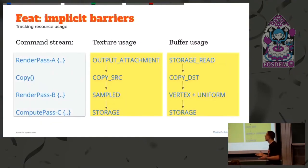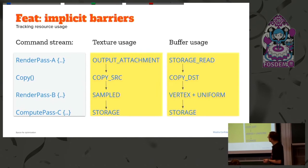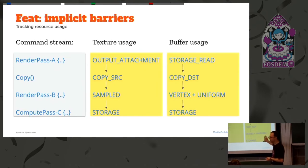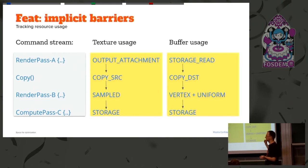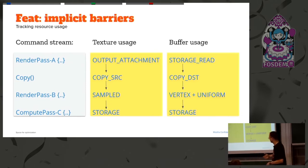Implicit barriers: you can see four different pieces in the command stream where the usage of textures and buffers changes between operations. Some read-only usages can be combined, as in D3D12. Mutable usages cannot be combined — if you try to combine them within the render pass, which is the synchronization scope for us, we will trigger an error.